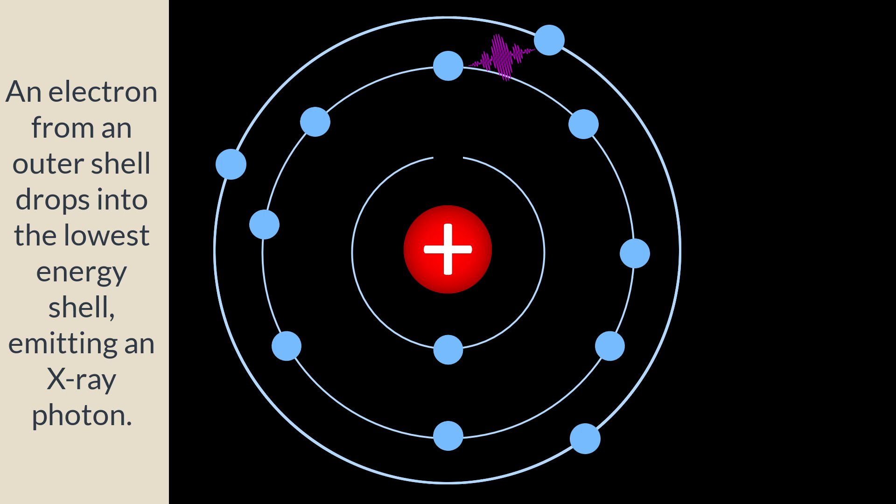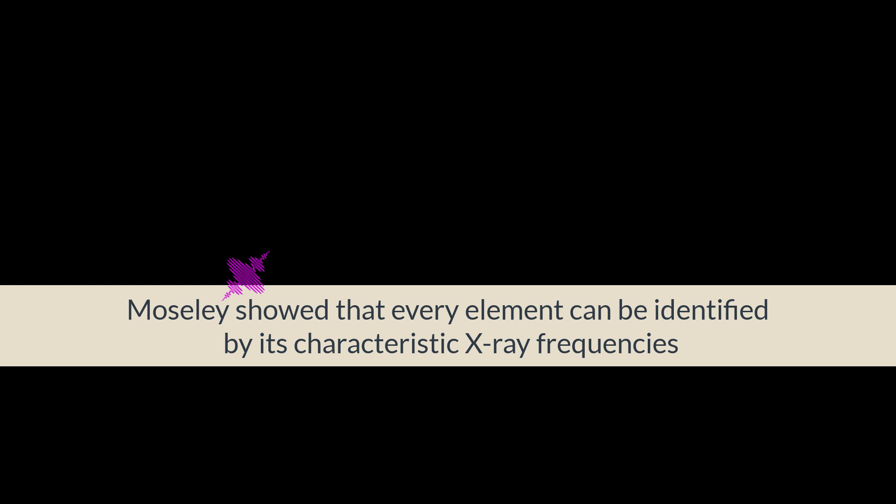An electron from an outer shell immediately fills the vacancy, giving up energy in the form of X-ray emission. Moseley's work showed that these X-rays are unique to the element radiating them, because every element has one-of-a-kind electron energy levels. These X-rays are called characteristic X-rays.